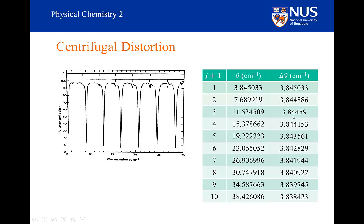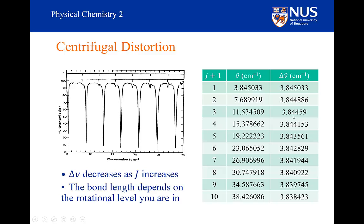If I go to a higher J level and the bond length changes, this will have an effect on the rotational constant. If the bond length is larger, the moment of inertia is larger, and so my rotational constant is smaller. It is not surprising that the gap is getting smaller as I go to higher J values. Delta nu, the change in frequency, decreases because the bond length depends on which rotational level you are in.